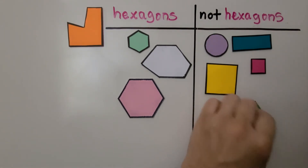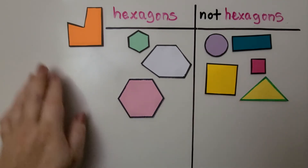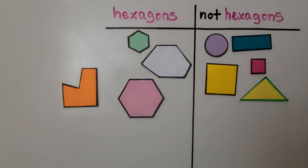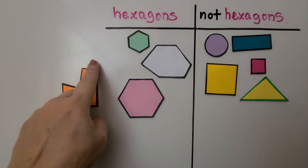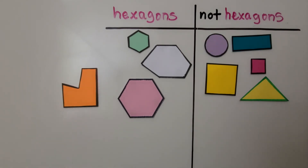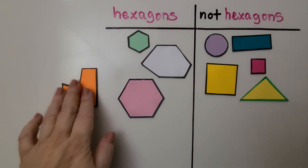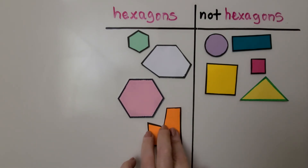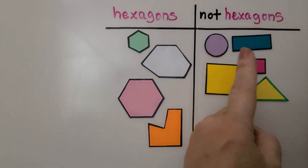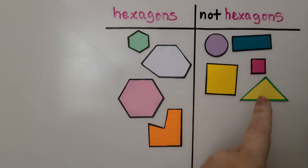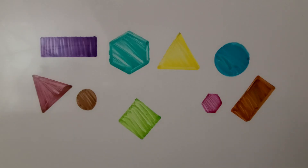This one has one, two, three sides — do you know what shape this is? If you said triangle, you're right — that's a triangle, not a hexagon. What about this strange-looking shape? Let's count the sides: one, two, three, four, five, six — it has six sides, it is a hexagon. We've counted one, two, three, four hexagons and one, two, three, four, five not hexagons.